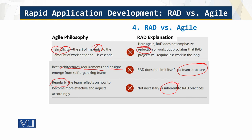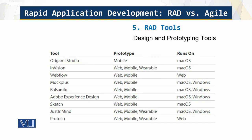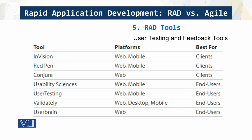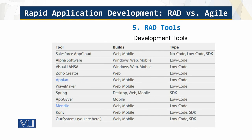How do you achieve the objectives of RAD? You achieve them using RAD tools. These tools cover mobile, variable devices, and web mobile development, with diversity in operating systems including Windows and Mac OS. There are also user testing and feedback tools. The RAD environment is a rich ecosystem — there are many tools for development, testing, and feedback, and the list goes on.